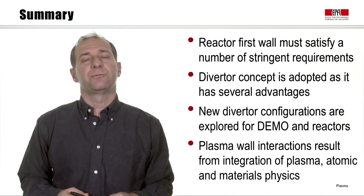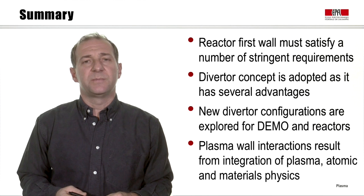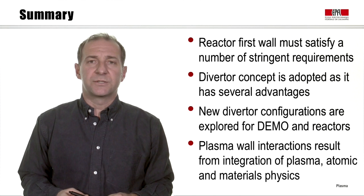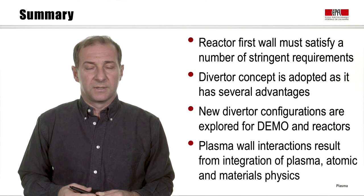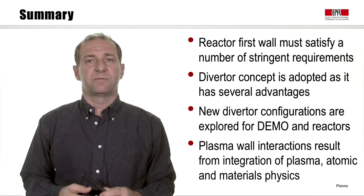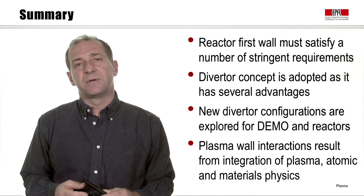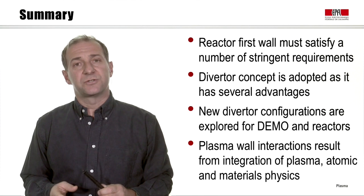To summarize: we have seen that the reactor first wall must satisfy very stringent requirements. The diverter concept is commonly adopted because it has several advantages over the limiter concept. New diverter configurations and innovative schemes are being explored for DEMO and beyond. Plasma wall interaction results from a very intricate combination of plasma physics, atomic physics, and materials physics. In the next module, we will look at aspects of materials physics and issues associated with functional and structural materials for reactors.